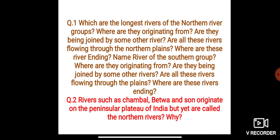Most of the rivers in the northern states originate from the Himalayas — they come from the Himalayas and then move to the plains, where they are joined by many other rivers. The rivers of the southern group originate in the peninsular plateau and flow towards the coastal plains.